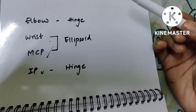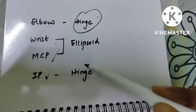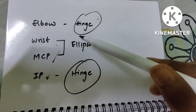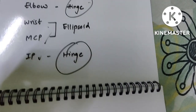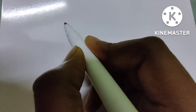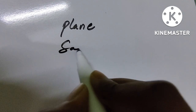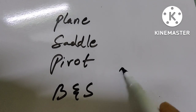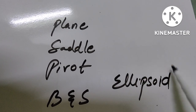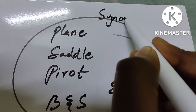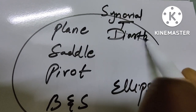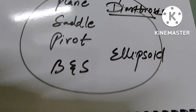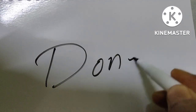For hand joints, remember in order: elbow, wrist, metacarpophalangeal (MCP), and interphalangeal (IP). Elbow and interphalangeal joints are hinge joints; wrist and MCP are ellipsoid joints. All the synovial joint types — plane, saddle, pivot, ball-and-socket, ellipsoid, hinge — come under diarthrosis, which is the synovial category. So synarthrosis is fibrous, the middle is cartilaginous, and diarthrosis is synovial.